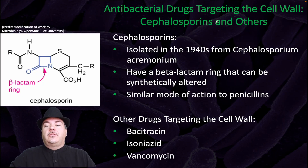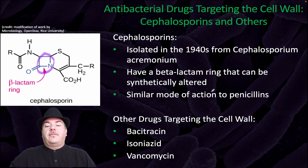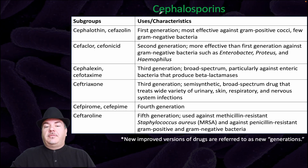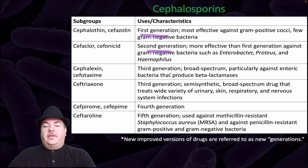We also have antimicrobial drugs targeting the cell wall — cephalosporins and others. Cephalosporins were isolated in the 1940s. They have a beta-lactam ring that can be synthetically altered, so they have a similar mode of action to the penicillins. Other drugs that target the cell wall include bacitracin, isoniazid, and vancomycin. Cephalosporins have gone through several generations, each addressing different aspects — for example, the fifth generation is used against MRSA, which stands for methicillin-resistant Staphylococcus aureus.